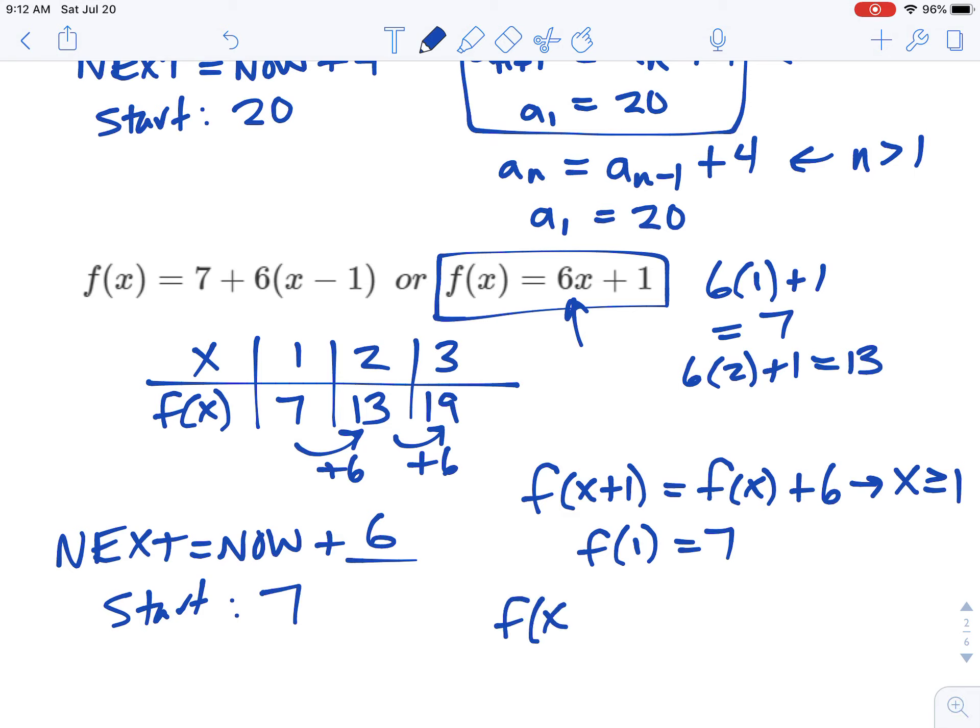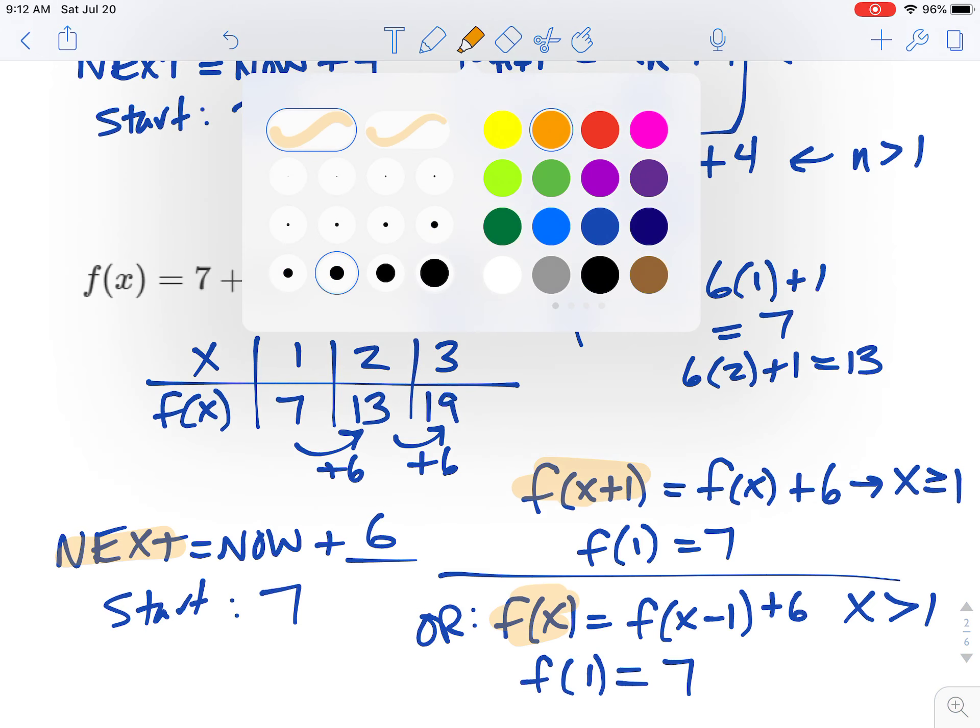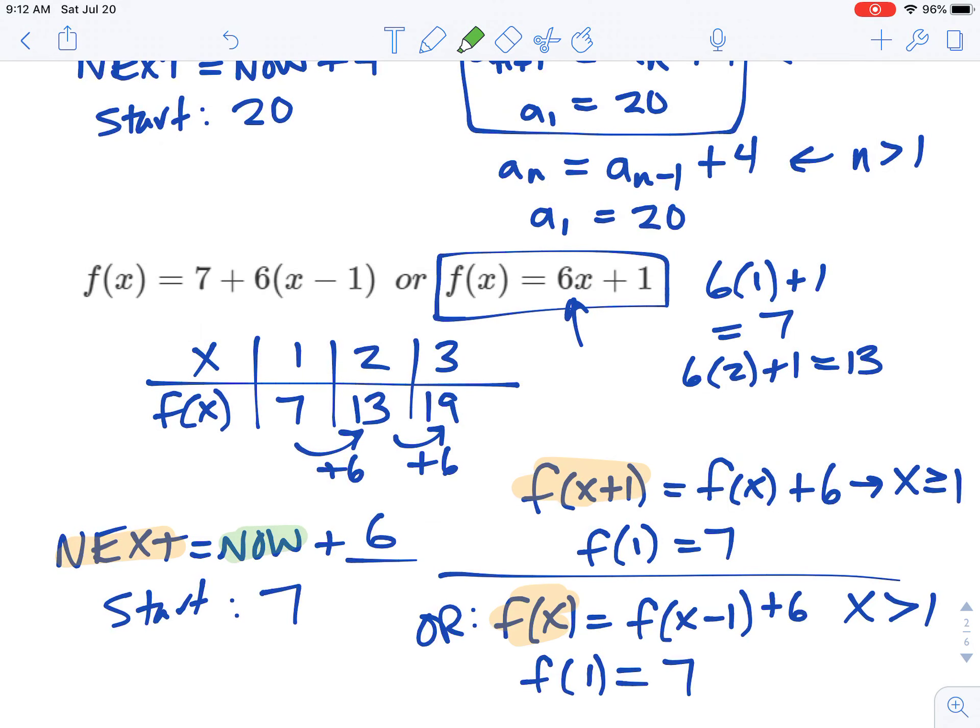Or we could write it a little differently. You could say f of x equals f of x minus 1 plus 6 when x is greater than 1. And again, f of 1 would equal the first term, 7. Both of those say the same thing because the next term is the current term, the term before it, the now, plus 6 starting at the first value, which is 7. And that's how we take an explicit formula, produce a table, and then use that table to make a recursive formula for a sequence.